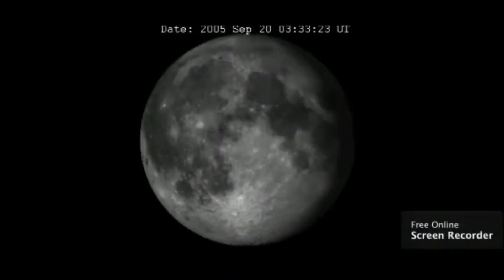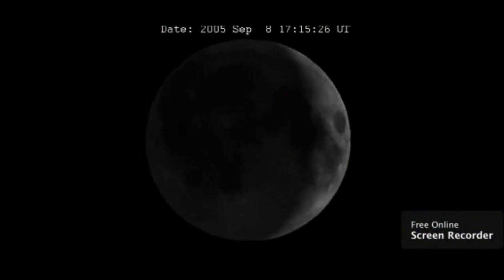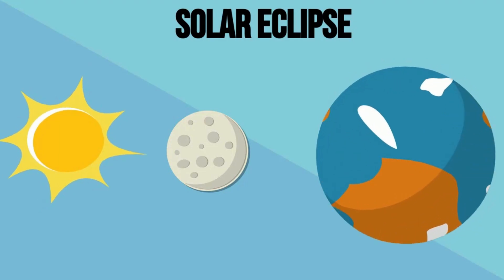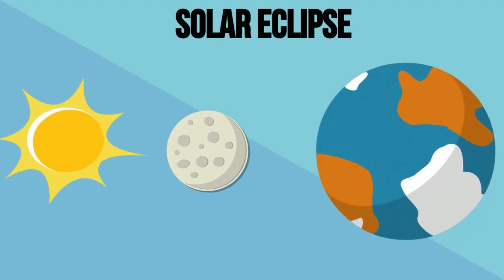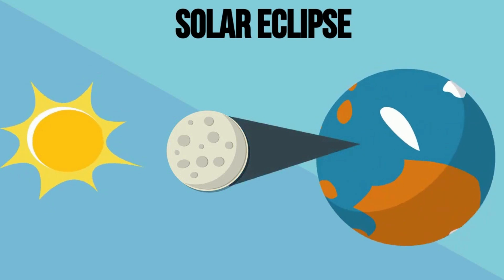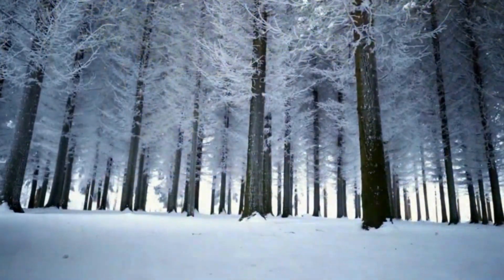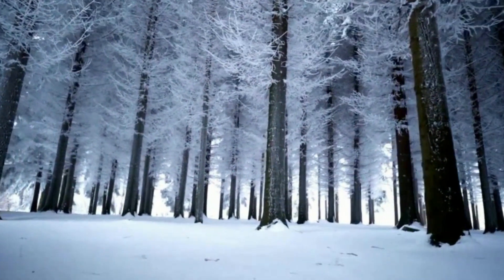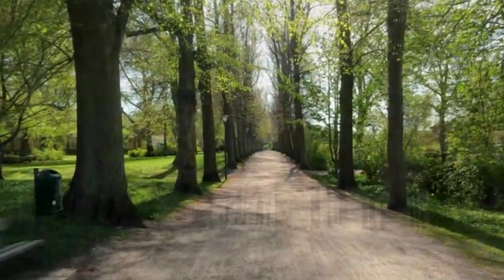You will explain the various phases of the moon and their causes, describe the causes and process of solar and lunar eclipses, and understand the reasons for the changing seasons on Earth, including the Earth's tilt in orbit.